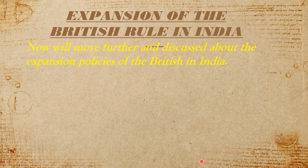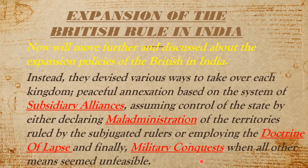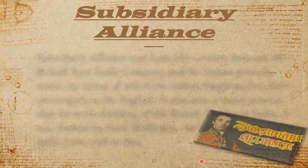Now we will move further and discuss the expansion policies of the British in India. They devised various ways to take over each kingdom: peaceful annexation based on the system of subsidiary alliance; assuming control of the state by declaring maladministration or misgovernment; or employing the Doctrine of Lapse; and finally military conquest when all other means seemed unfeasible.